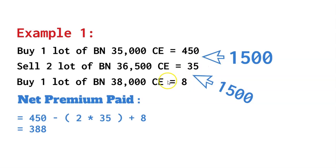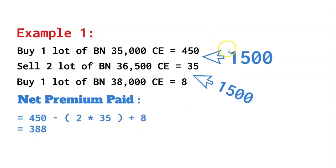The max loss is when Bank Nifty ends exactly at 36,500, and the max loss would be 388 points — the net premium paid. The max profit would be 25 (lot size) multiplied by approximately 1,050 to 1,100 points, giving around 27,000 rupees in profits. The max loss would be 25 multiplied by 388, which is around 9,500 rupees. You can use option payoff chart tools available on the internet to visualize this. I like this strategy because it has both offense and defense.